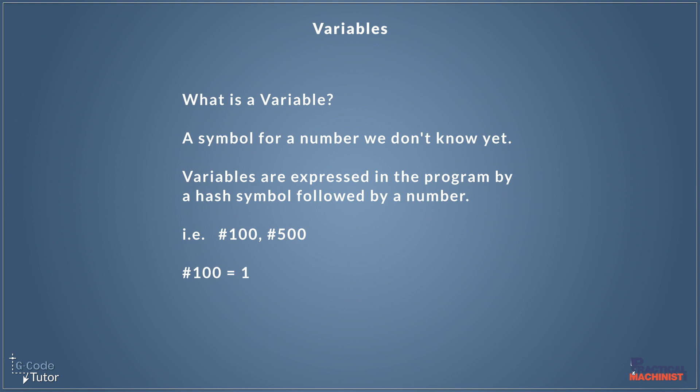So we can give variables a number or a value. So if we state hash 100 equals one, from there onwards, our variable 100 would be equal to the value of one. And we can do maths with these variables. So we can say that hash 110 plus one is equal to variable 100. So we can manipulate our values and do maths with these variables quite easily within G-code.